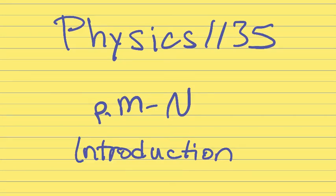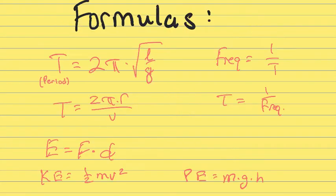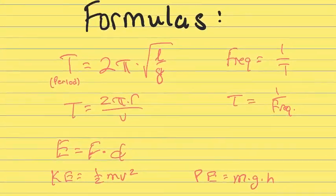Let's talk about physics PACE 1135, pages M through N. I first want to point out that in this section of the PACE, there are several formulas that are given, and I would suggest that you write them down on a piece of paper, maybe a 3x5 card or 4x6 card, something like that, and put these formulas on there so that you have them written down.